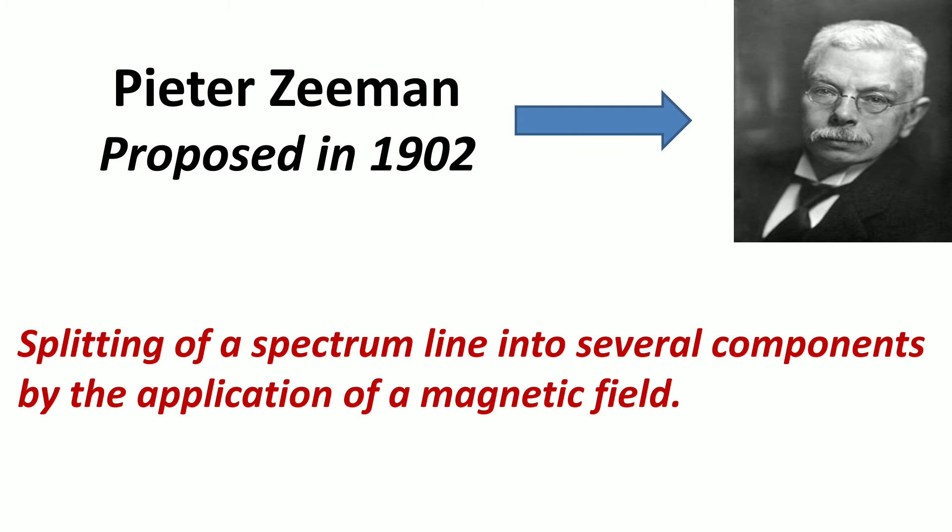The Zeeman effect is named after the Dutch scientist Pieter Zeeman, who proposed this effect in 1902. According to this effect, there is a splitting of spectral lines into several components by the application of a magnetic field.